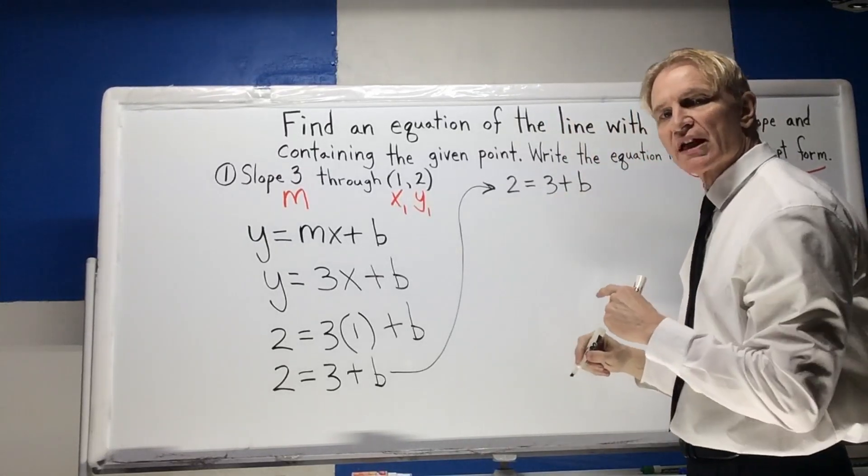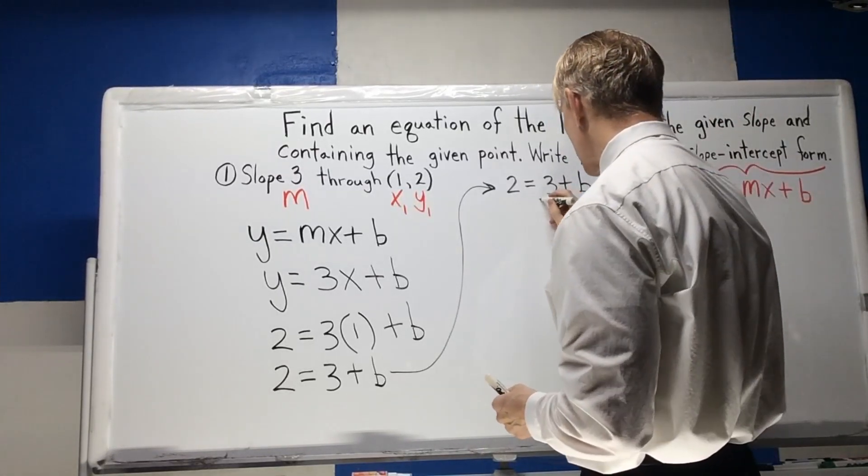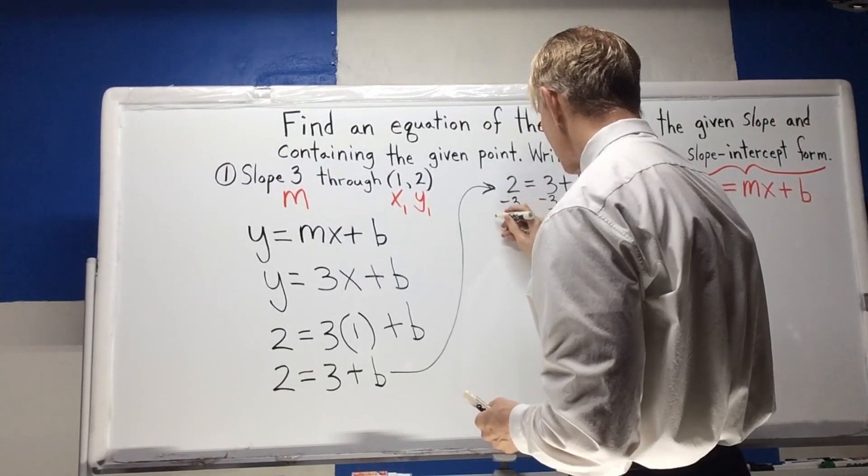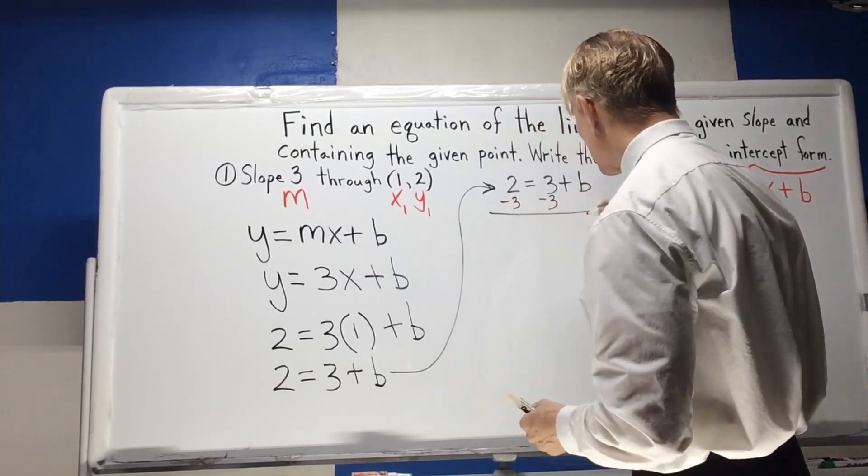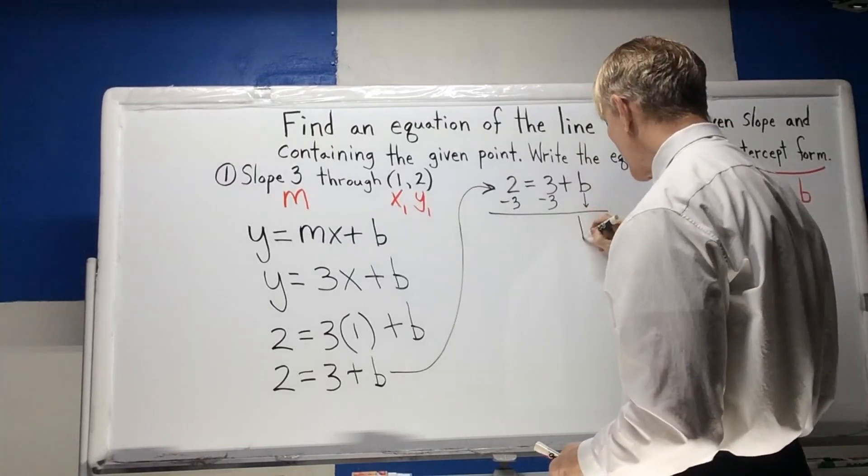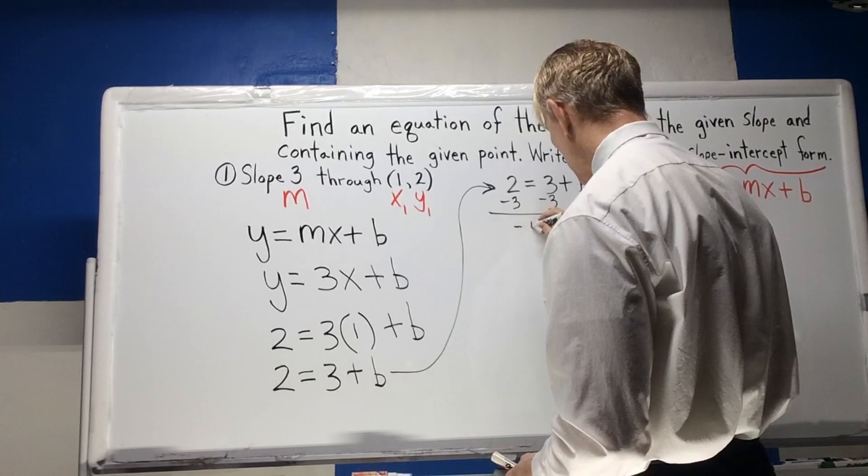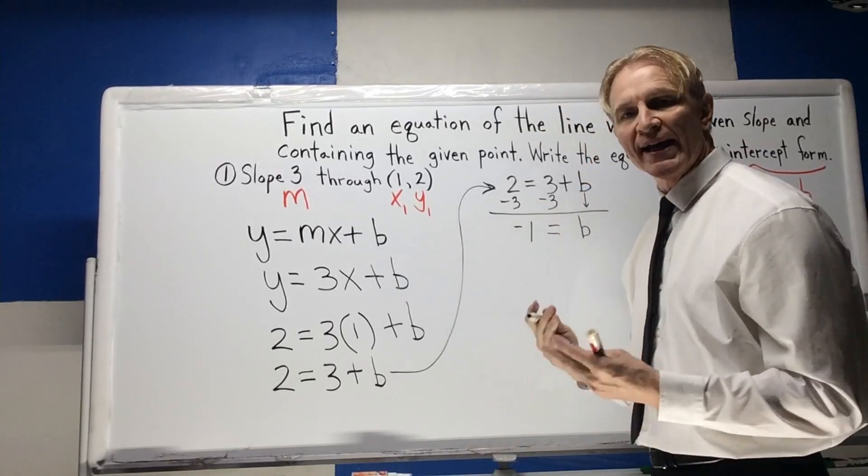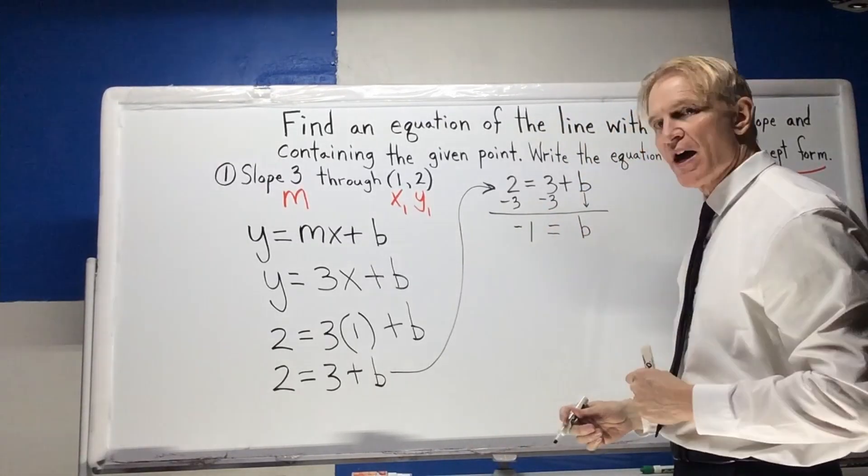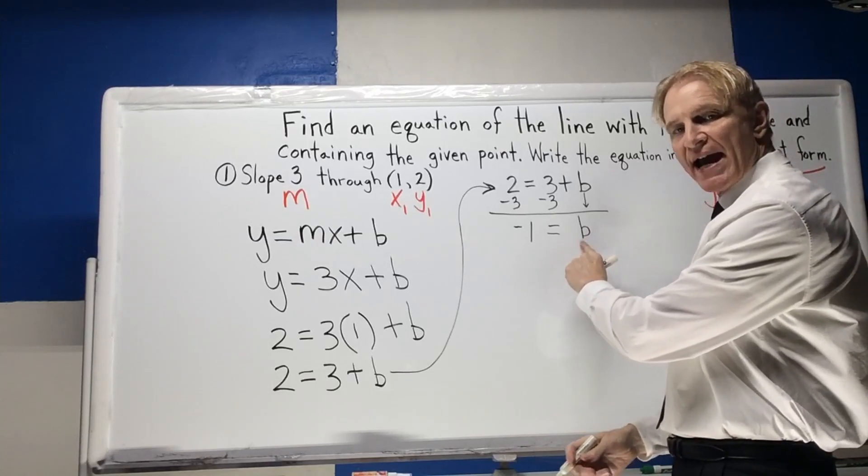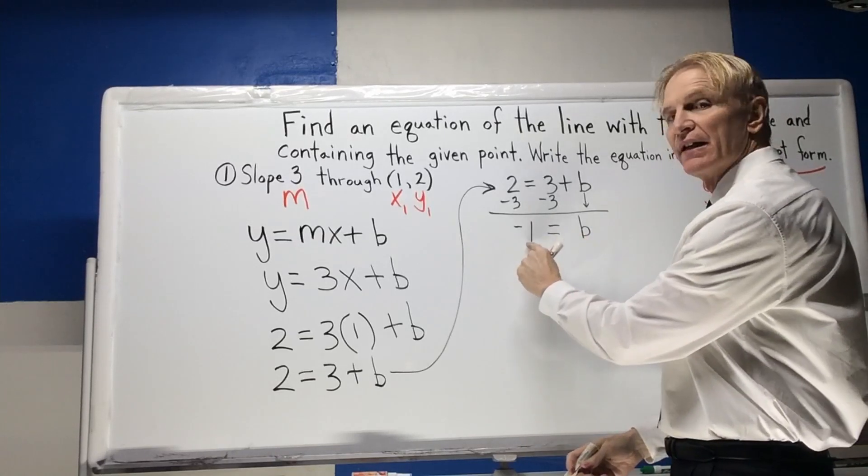And then what I'm going to do is I'm going to subtract 3 from both sides. In which case, we know that b is going to equal negative 1. The y-intercept is negative 1. The place where it bisects the y-axis is at negative 1.